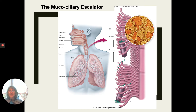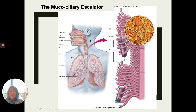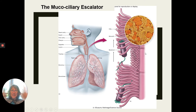My favorite — just because it has such a cool name — is the mucociliary escalator, which protects our upper respiratory tract, keeping things out of the lungs. Our trachea is lined with ciliated cells that continuously sweep upward, while goblet cells produce mucus that traps bacteria, and those cilia flush the bacteria up and out.